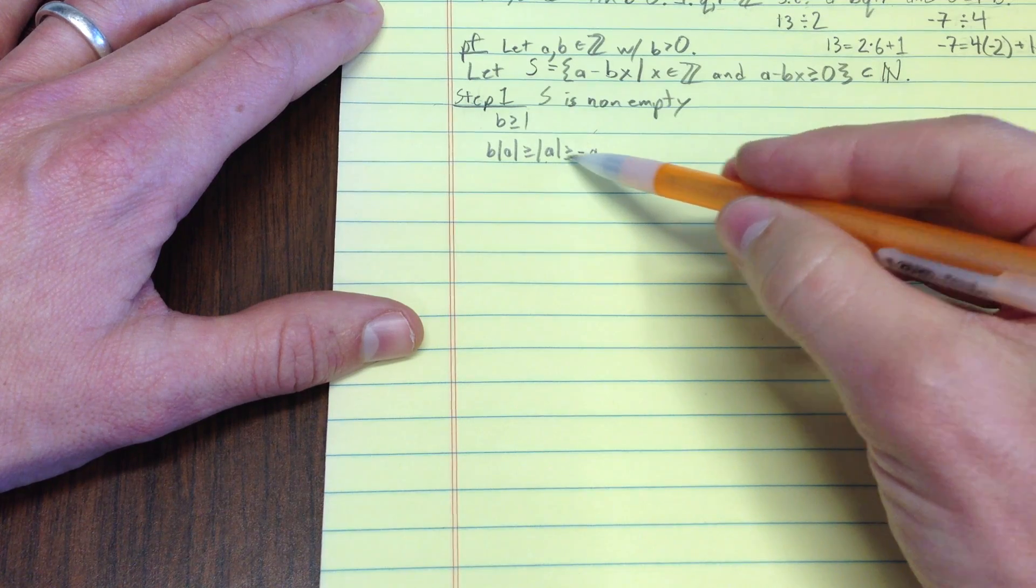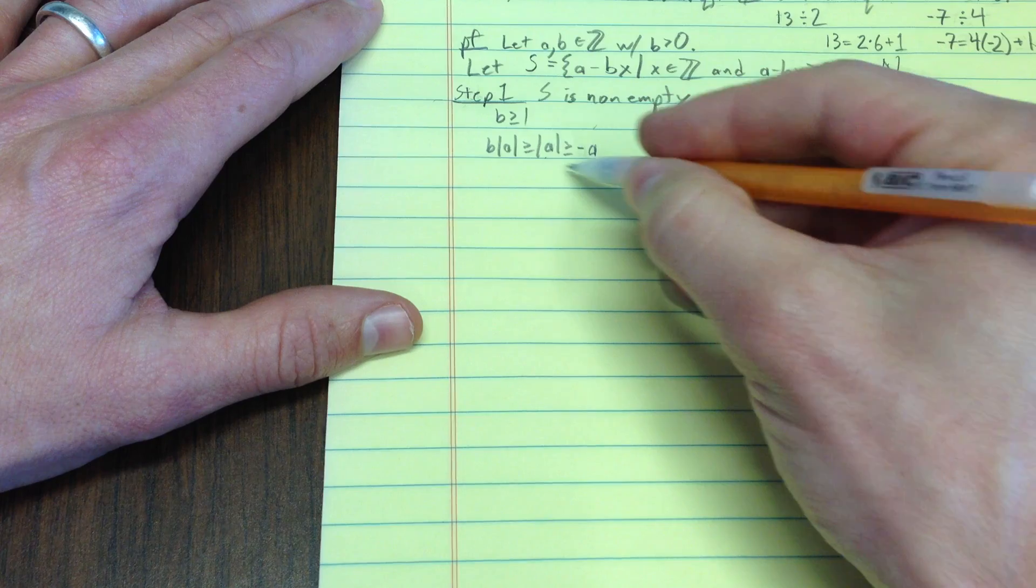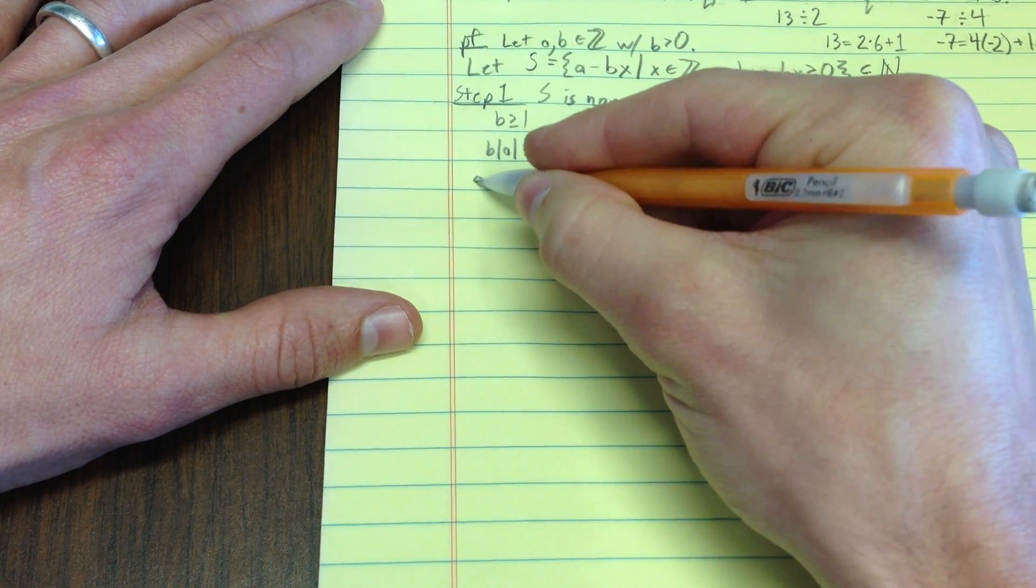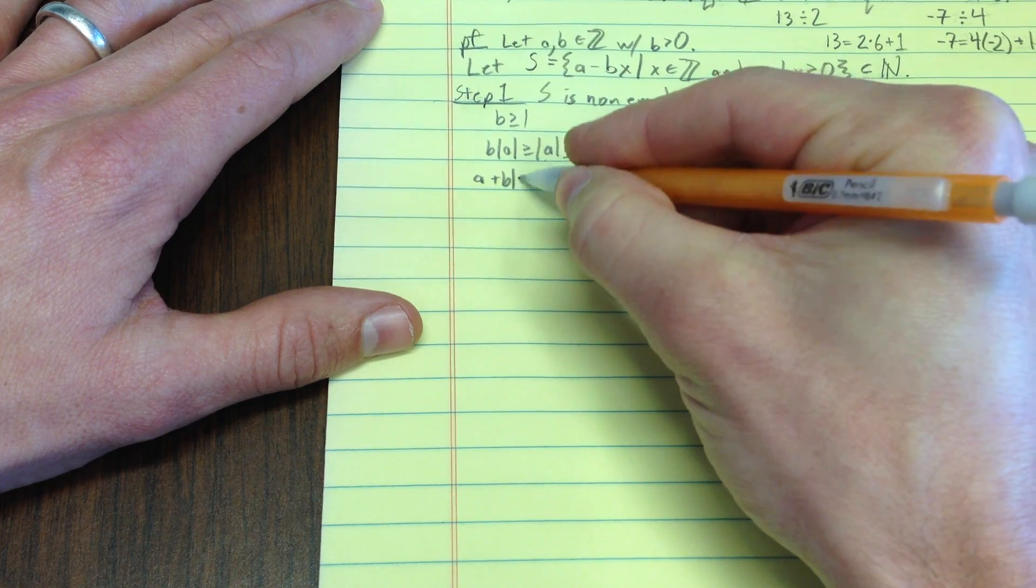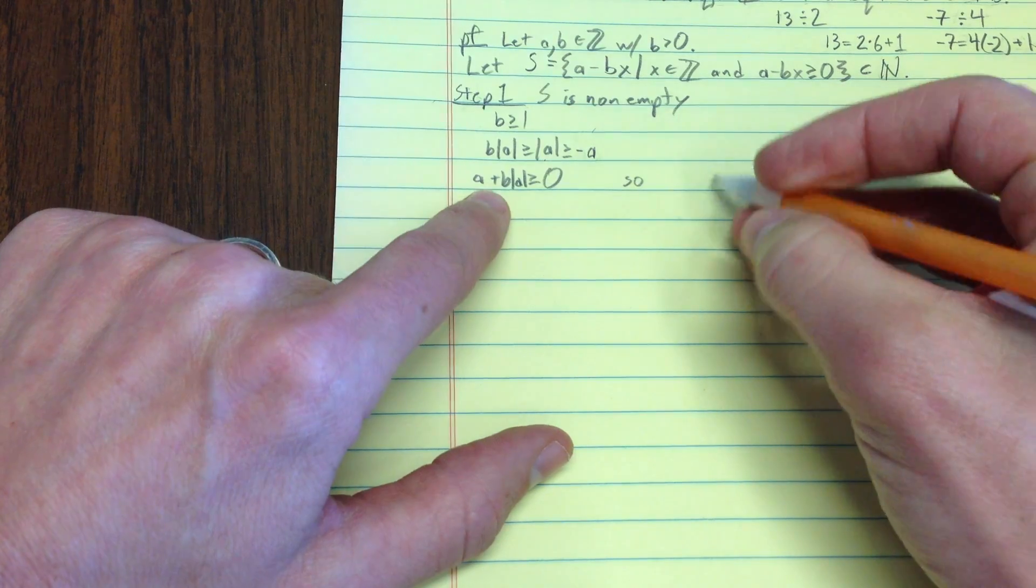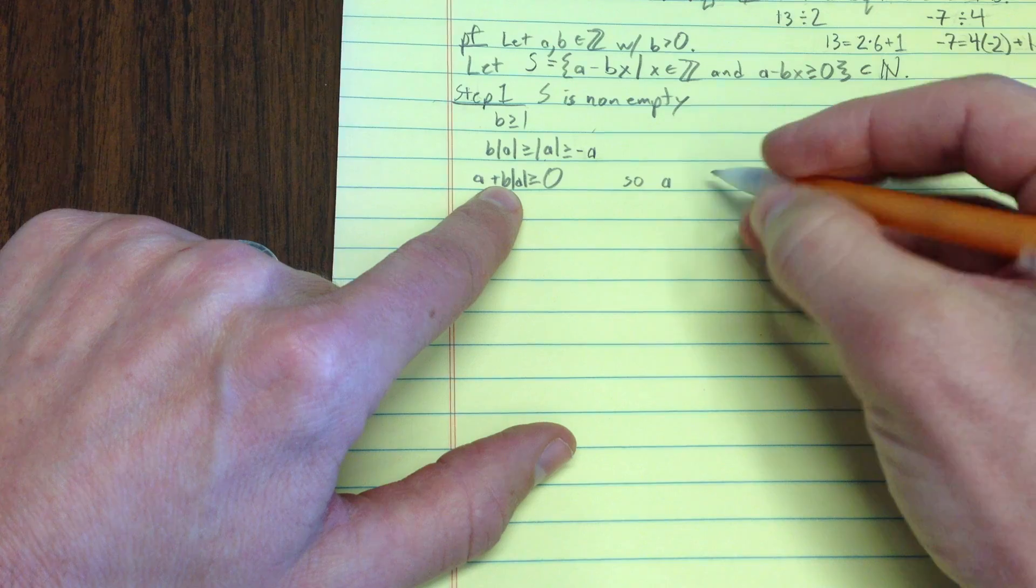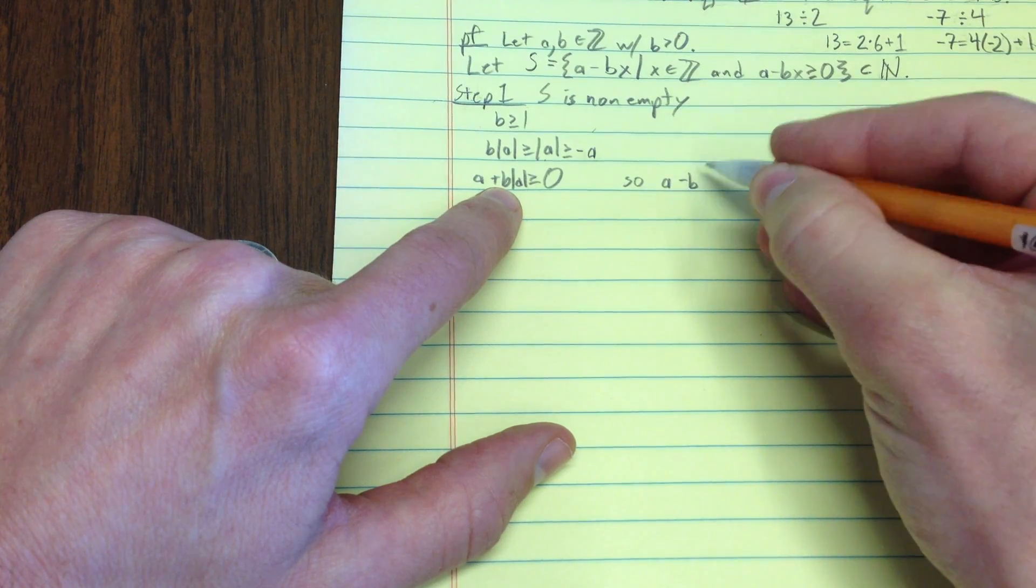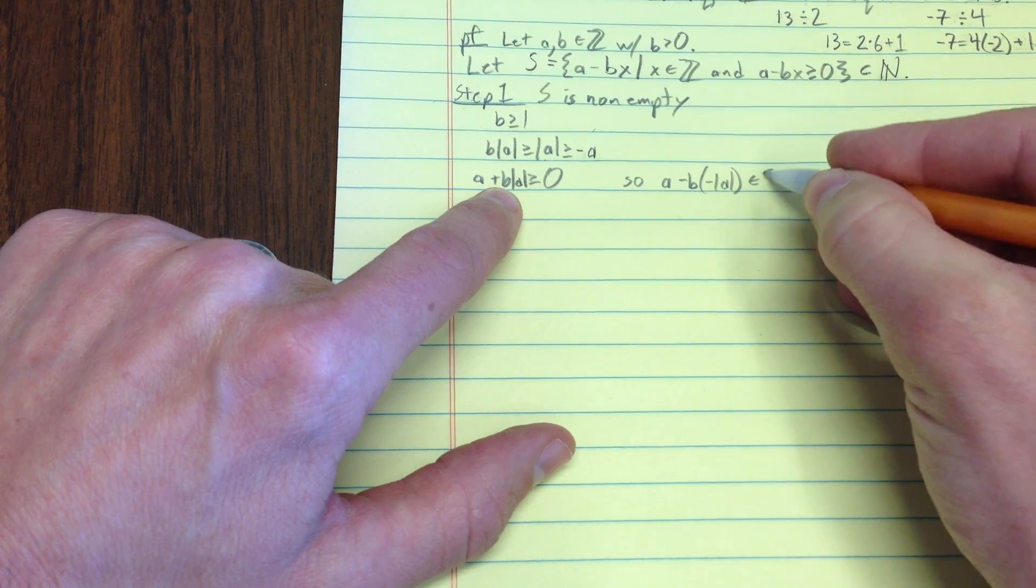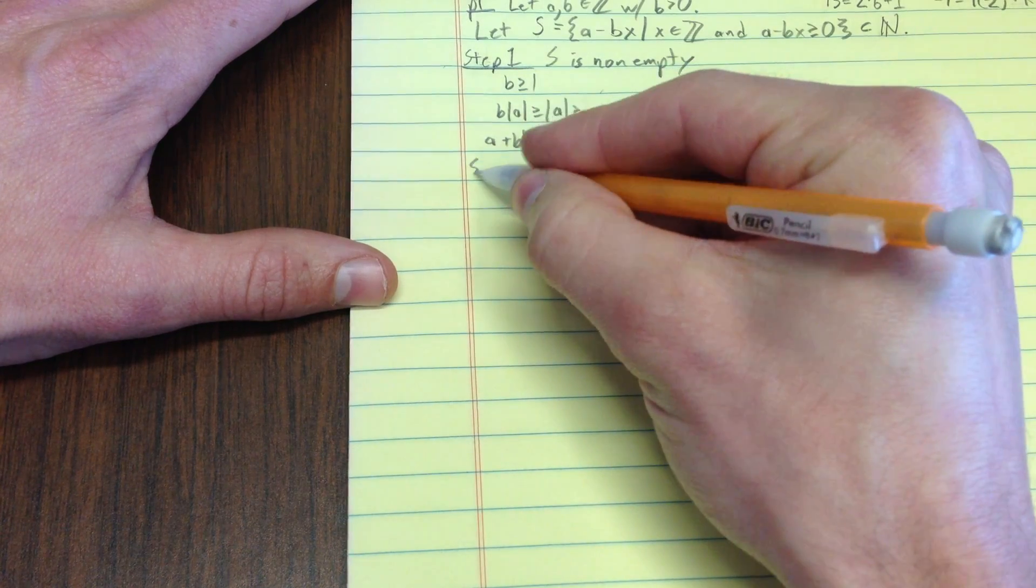Of course, this is equal if a is negative. Now, I'll just add a to both sides. What's that get me? That gets me zero over here. And a plus b times the absolute value of a, right? So, let's see. What's that say? That says a minus b times negative the absolute value of a is an s. It's not empty. Isn't that kind of a cute trick?